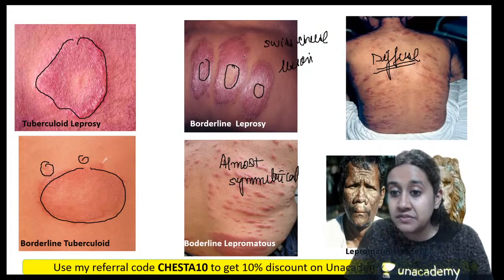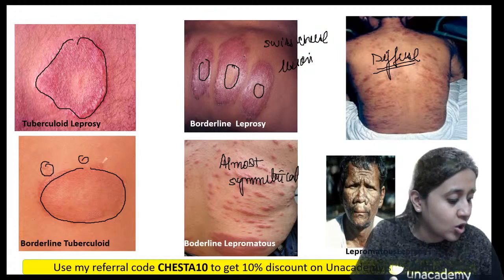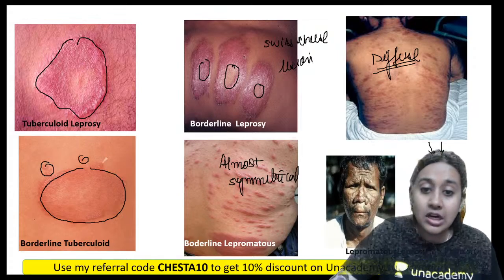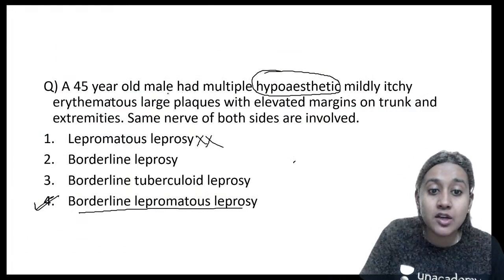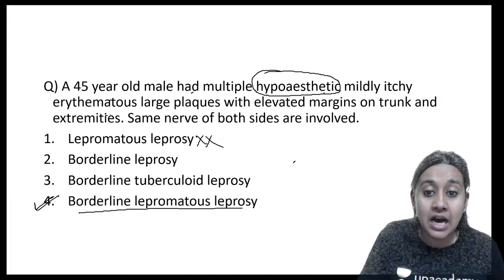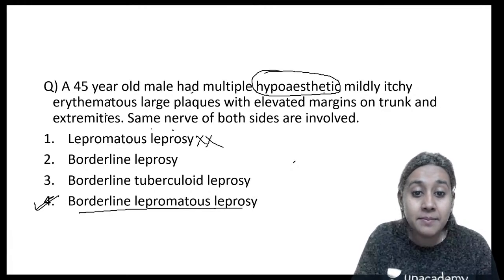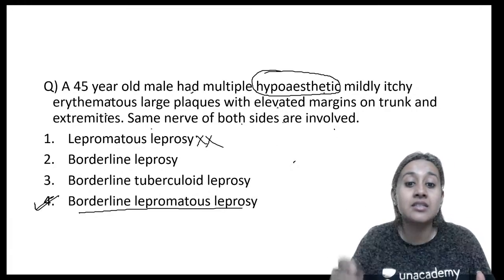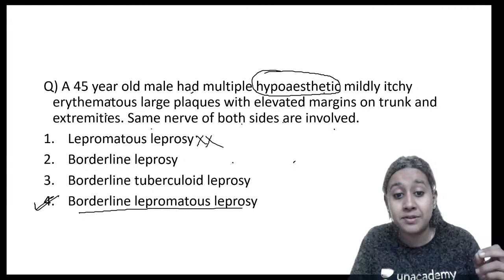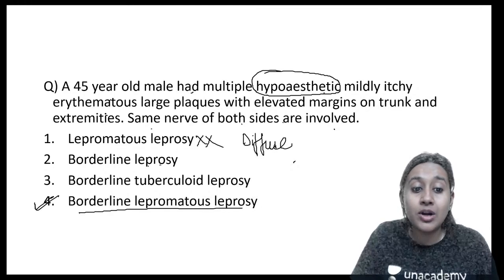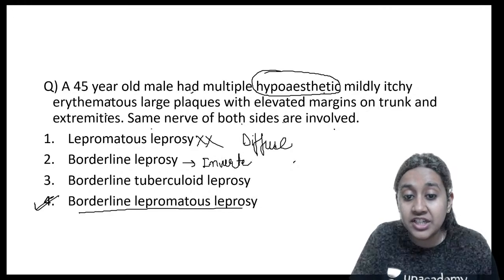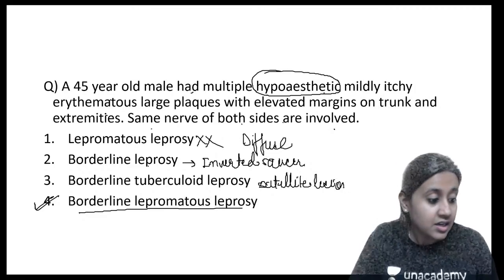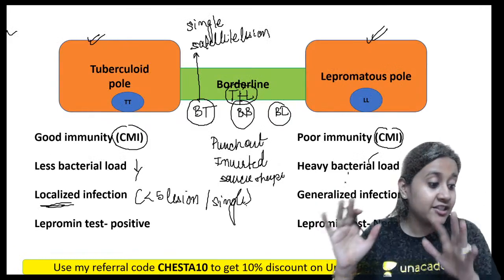In lepromatous leprosy, there is diffuse infiltration with facial involvement — this appearance is called leonine facies. Returning to the question: the 45-year-old male had multiple hypoesthetic erythematous plaques with elevated margins on trunk, and the same nerves of both sides are involved — bilaterally symmetrical nerve involvement. This clues us into borderline lepromatous leprosy. BL has almost symmetrical lesions, BB has inverted saucer-shaped or punched-out lesions, and BT has satellite lesions.